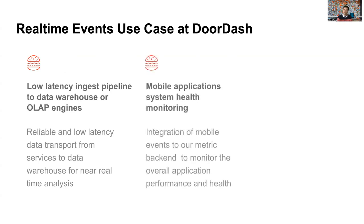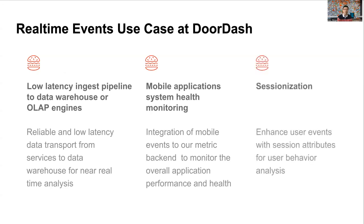The second use case is mobile application health monitoring. Some mobile events will be integrated with our time-series metric backend for monitoring and alerting so that teams can quickly identify issues in the latest mobile application releases. The third use case is sessionization — we would like to group user events into sessions and generate session attributes at real-time so that we can better analyze user behaviors and push real-time recommendations.